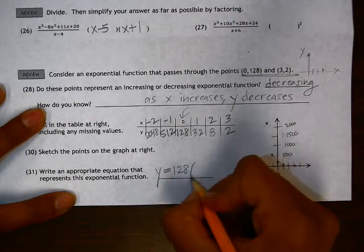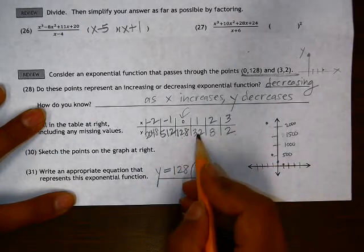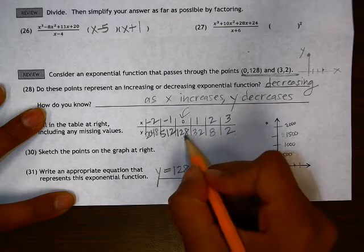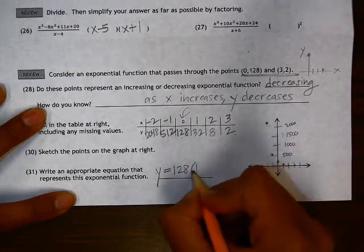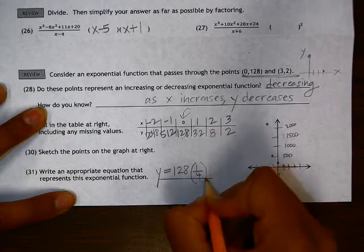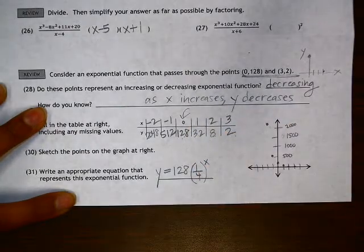And then we need a multiplier. So the multiplier, because we're dividing by 4, we're actually multiplying by 1 over 4, so that's our multiplier, and that is to the x power.